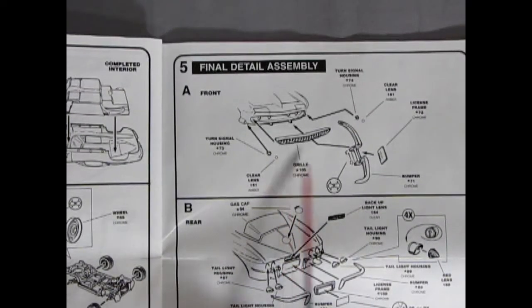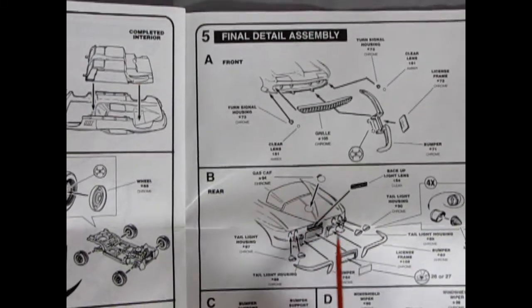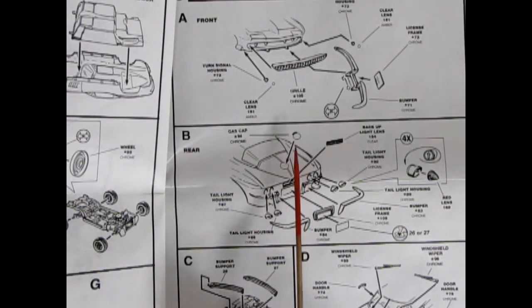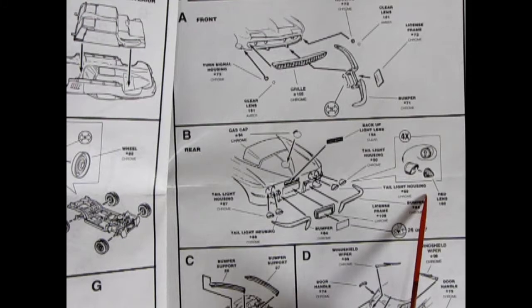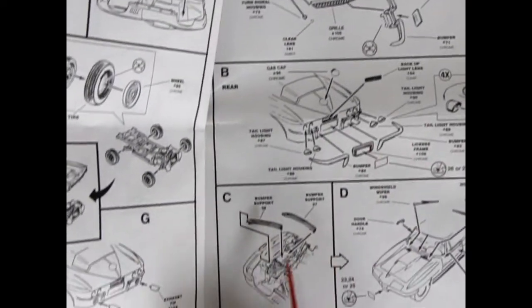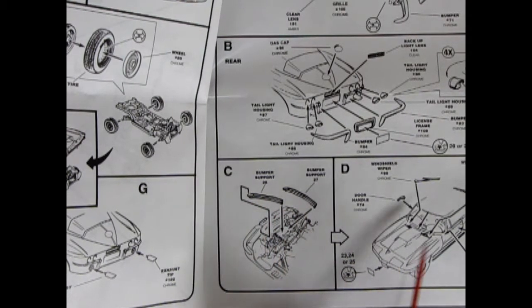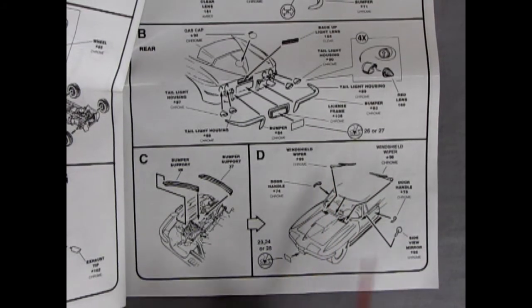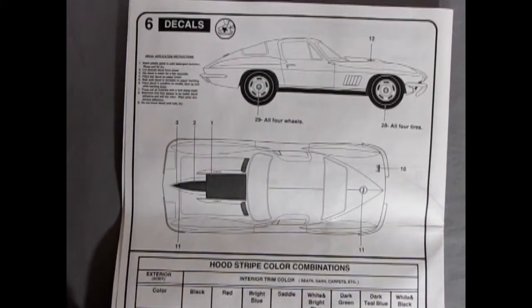There's your front grille going together with the bumpers and the license plate. And our turn signals and clear lenses. Separate clear lenses and those turn signals. So they're going to be tiny. Then we've got our body with the gas cap. The taillight housings. The bumperettes. Or the bumpers. Yeah, bumperettes. The red lenses in the back. And then back up under the body again for some bumper supports. Then we've got individually molded windshield wipers, door handles, side view mirror, and a decal. For a license plate. And then onto the back.